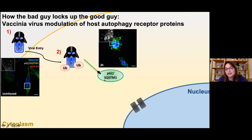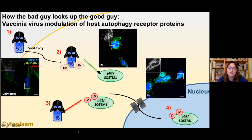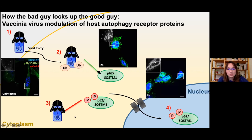When vaccinia comes into the cell, the cell recognizes it and tries to get rid of it using autophagy. One of the very important proteins here is p62, a key protein in autophagy. However, vaccinia virus has a trick — it modifies the protein p62 in a way where the protein has no other choice but to go into the nucleus of the cell, where the DNA sits. The protein is essentially trapped in the nucleus, and since autophagy happens in the cytoplasm, vaccinia has the cytoplasm to itself and can happily replicate.